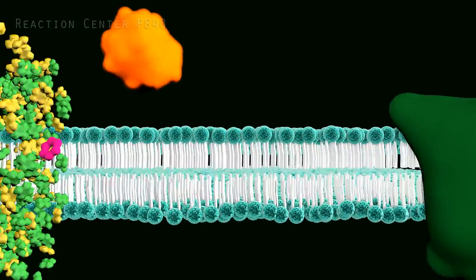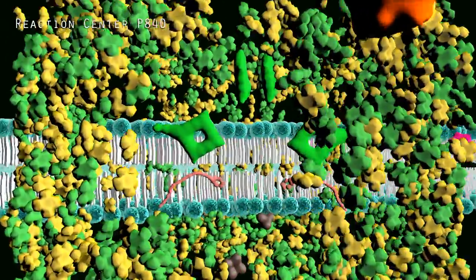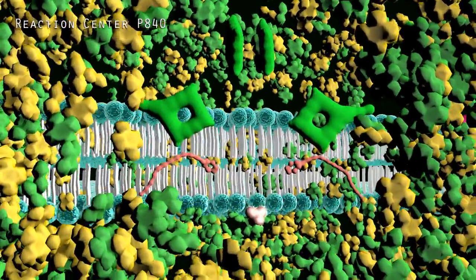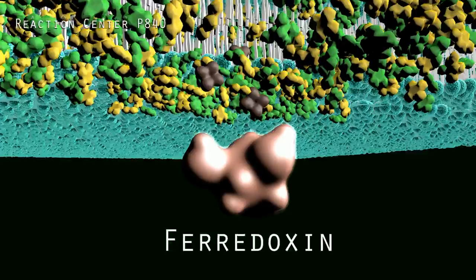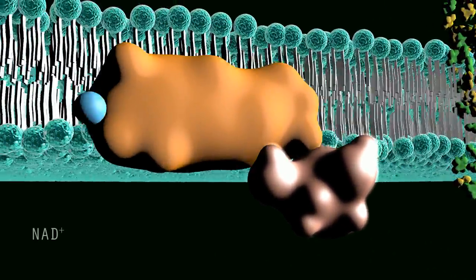Occasionally, an electron will continue down a series of iron proteins until it reaches ferridoxin. The electron will then be taken to an NAD reductase where NAD gains an electron to become NADH.